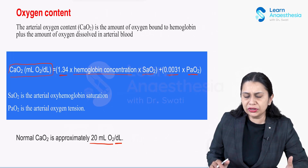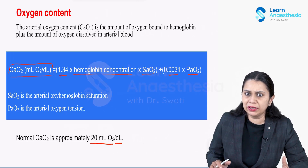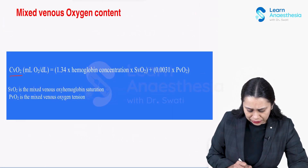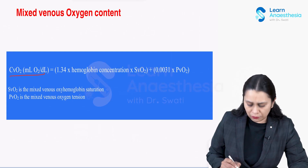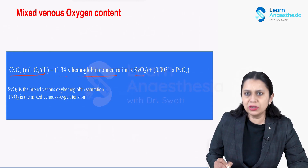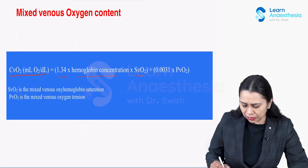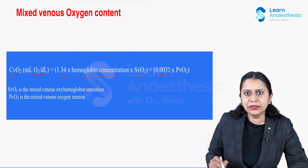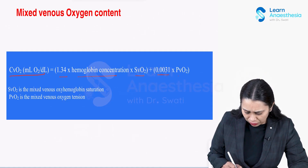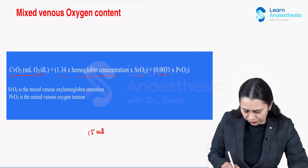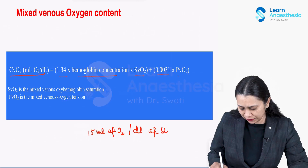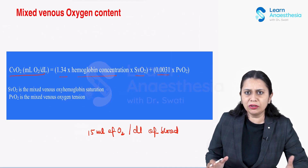Now let us discuss how much oxygen is normally present in mixed venous blood. In the same way, we calculate the oxygen content of mixed venous blood: 1.34 into hemoglobin concentration into the saturation of mixed venous blood, added to the solubility coefficient of oxygen multiplied by the oxygen tension in mixed venous blood. This comes out to be 15 ml of oxygen per deciliter of blood.